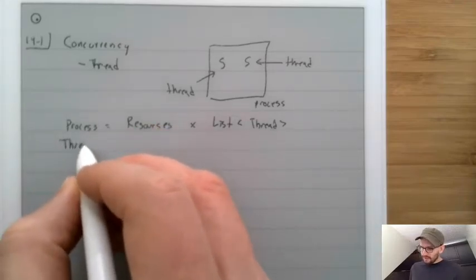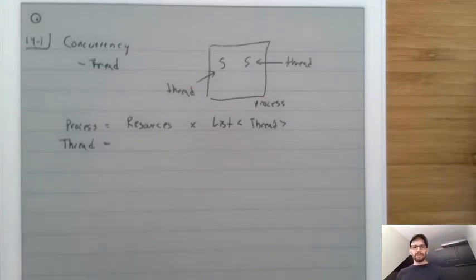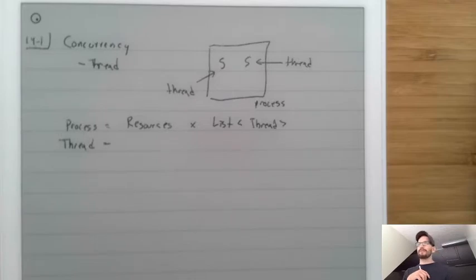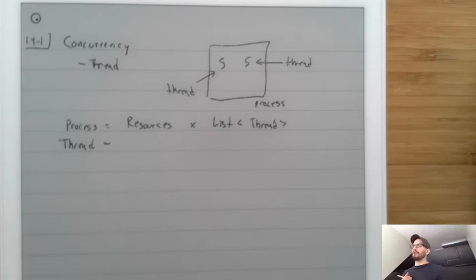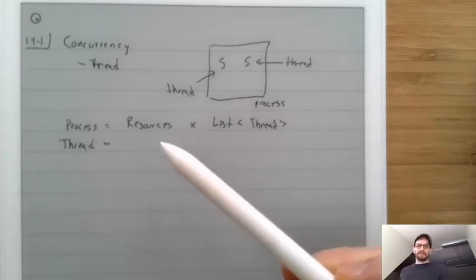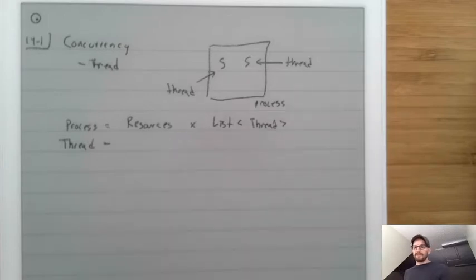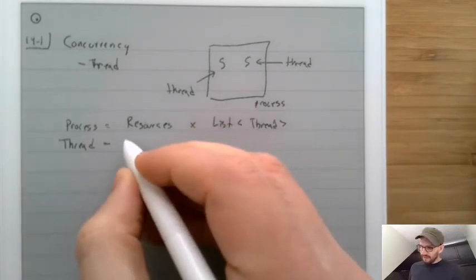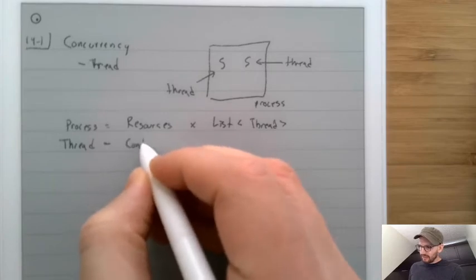But now what is a thread? Intuitively, the idea of a thread is the stuff that the program's doing. But what exactly does that mean - the stuff that your program is doing? It can't be memory, because that's part of resources. It must be something else. Well, it turns out that what a thread is, is really just a continuation.